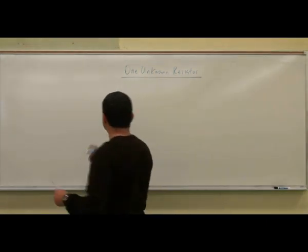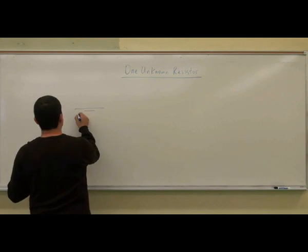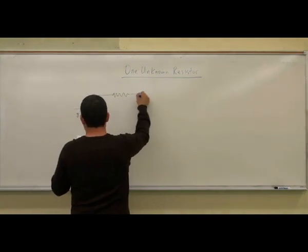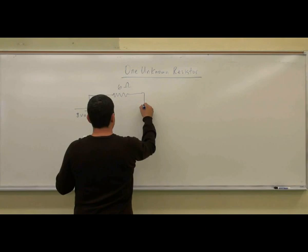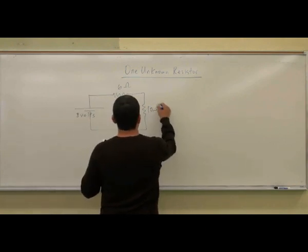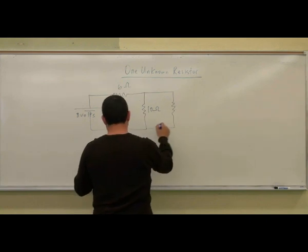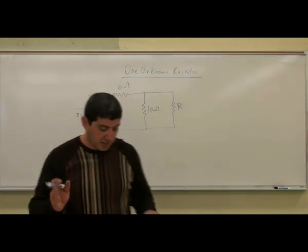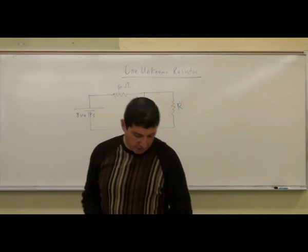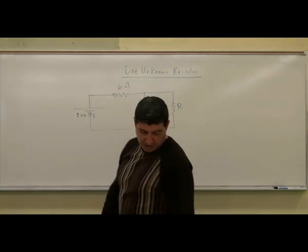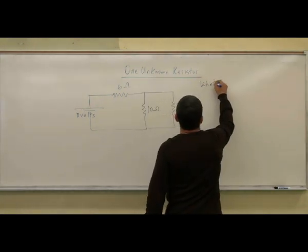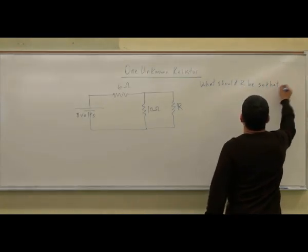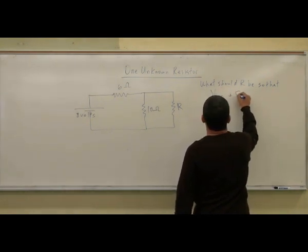So let's say you have this kind of circuit. It has eight volts and you have six ohms and ten ohms and R, unknown resistor, R. And let's say the problem tells you what should R be so that the voltage of the six ohm resistor is five volts. What should R be so that the voltage of the six ohm resistor is positive five volts?